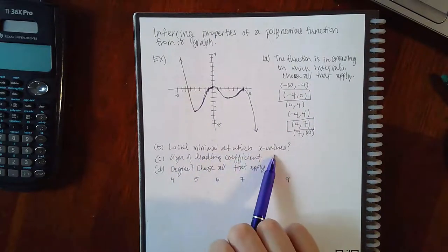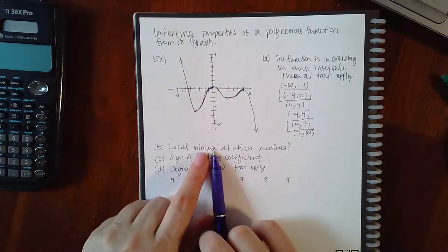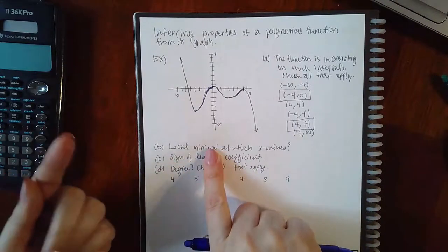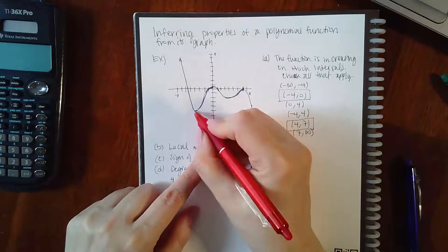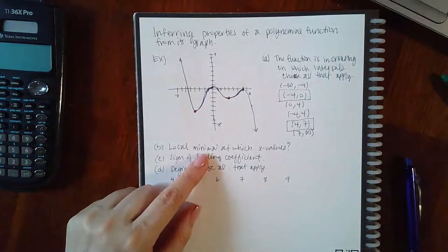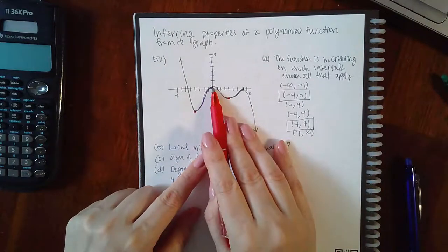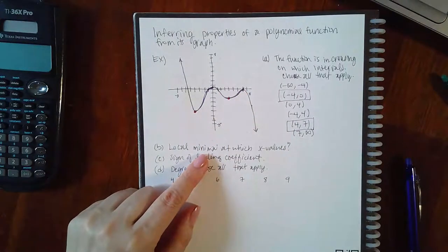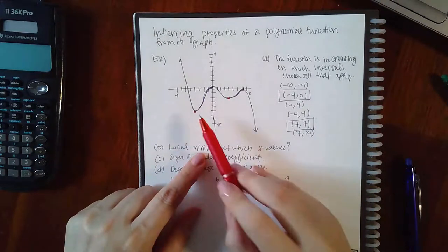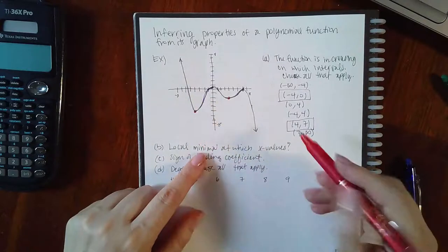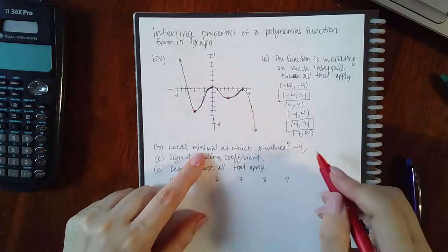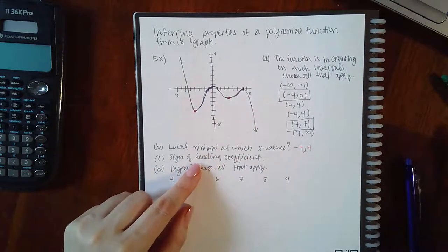Now at which x values do we have minima? So where do you have little valleys? If they had asked me for the maxima I would be looking for the peaks. Well, I have one little valley here and one valley there. If they were asking for maxima, this would be one maximum and that would be one maximum because those are the peaks. Minima is the valleys. What is the x value here? That x value is negative four. And what is the x value here? It's positive four.